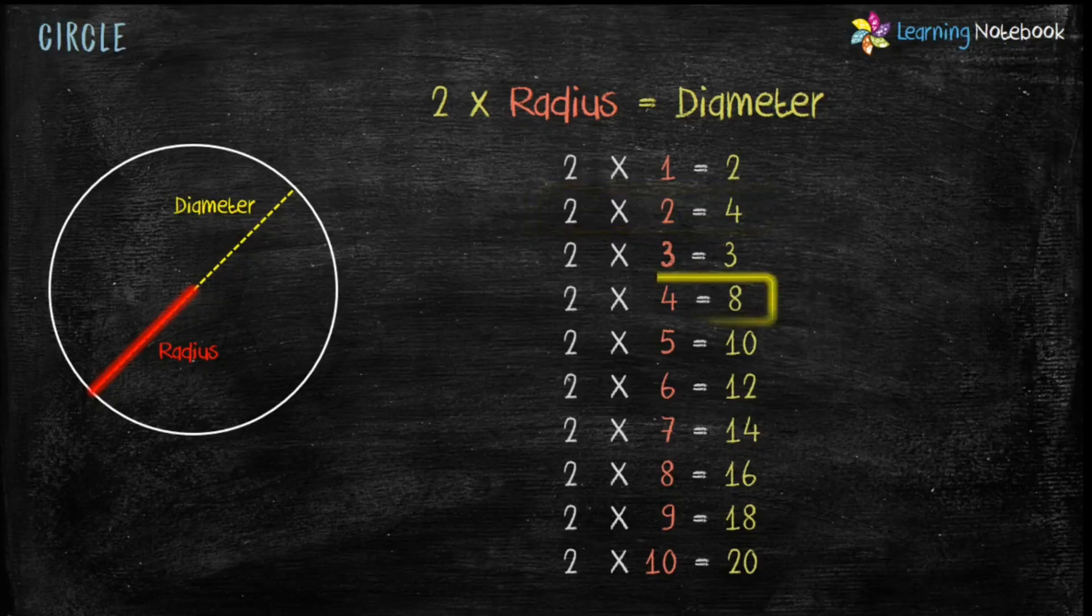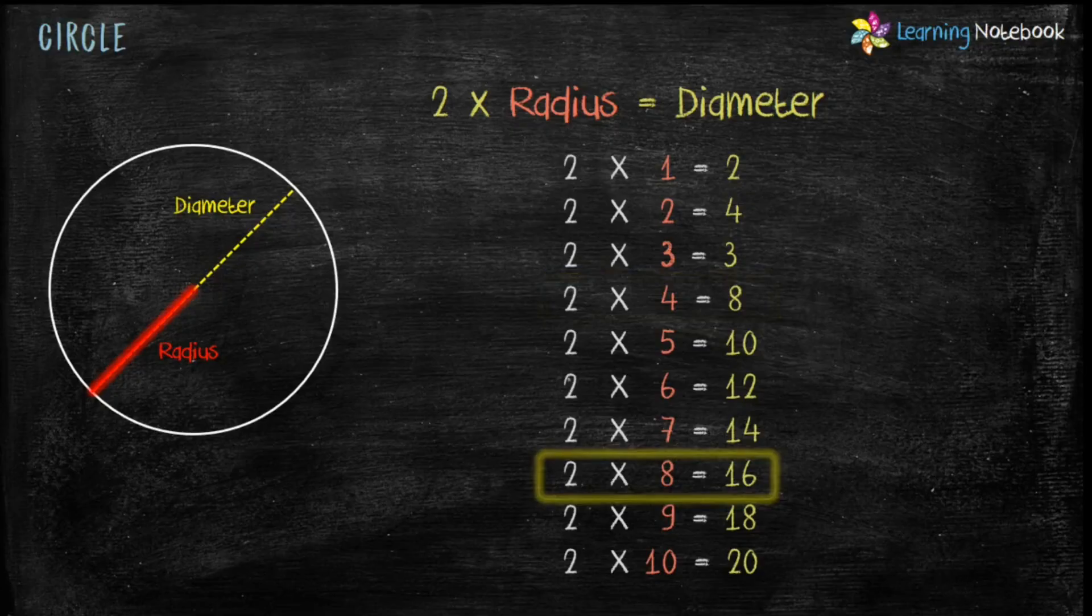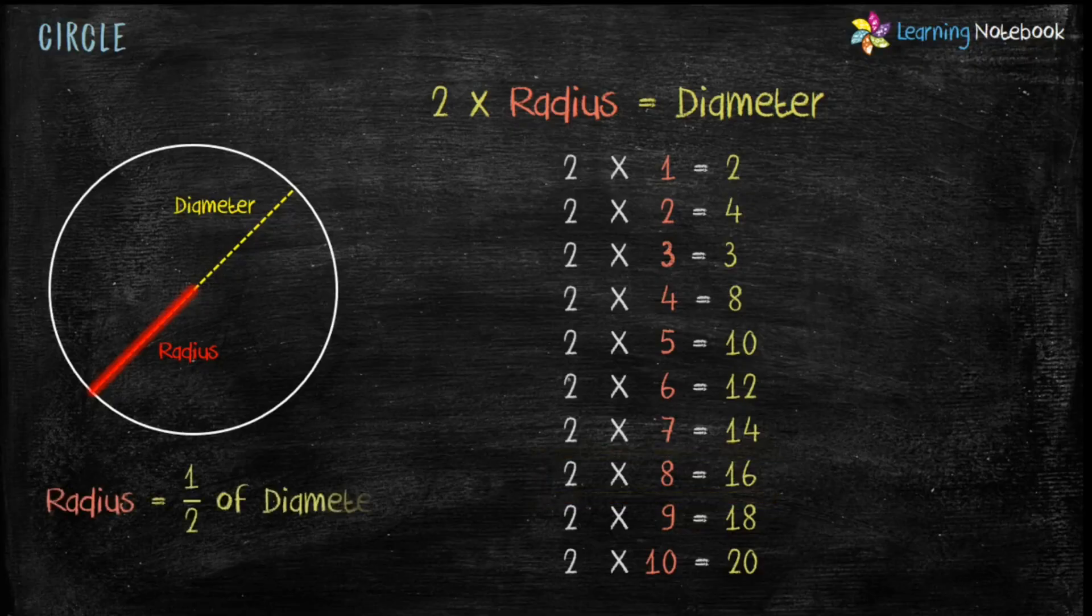And if radius of a circle is 8, its diameter would be 16. So students, we can also say that radius is half of diameter.